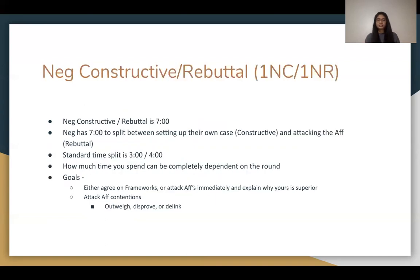The negative constructive rebuttal, known as the 1NC or 1NR, lasts seven minutes. The neg splits this time between setting up their own case — the constructive — and attacking the affirmative — the rebuttal. This is usually split around three minutes for their own case and four minutes to attack the affirmative, though this can vary depending on the round.